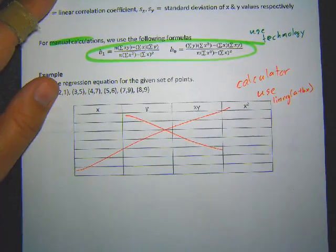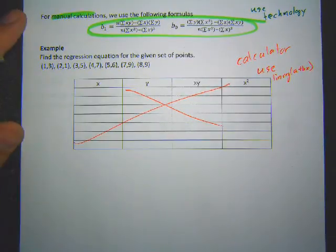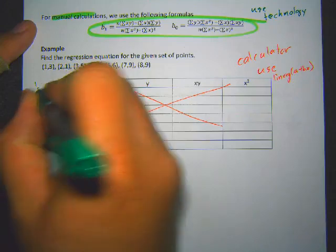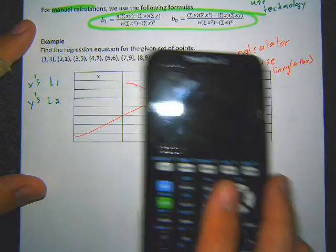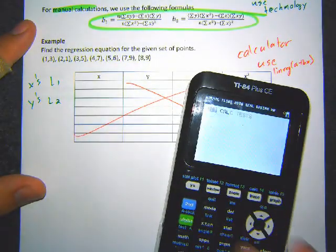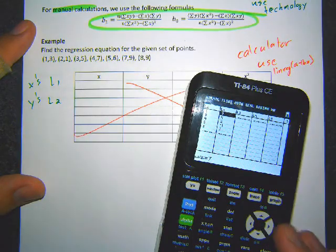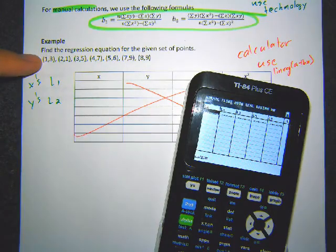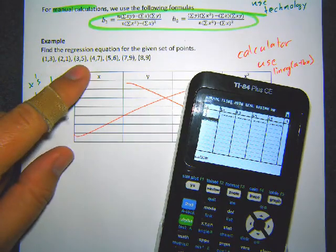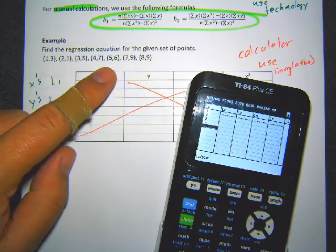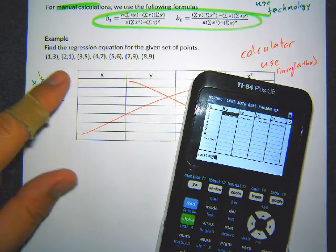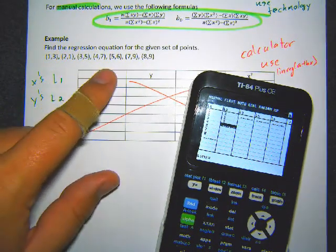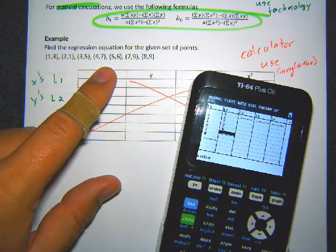Instead of doing it by hand, we'll use the calculator. We put our x-values in List 1 and our y-values in List 2. Going to STAT, hit ENTER on Edit, and clear the previous list. I'll type in the x-values: 1, 2, 3, 4, 5, 7, 8. Then the y-values: 3, 1, 5, 7, 6, 9, 9.